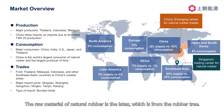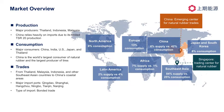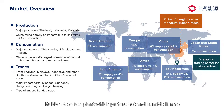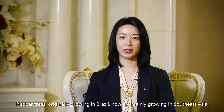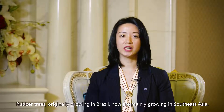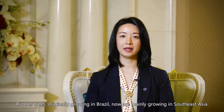The raw material of natural rubber is the latex, which is from the rubber tree. Rubber trees prefer a hot and humid climate, and that's why rubber trees are planted in tropical regions. Rubber trees, originally growing in Brazil, are now mainly growing in Southeast Asia.